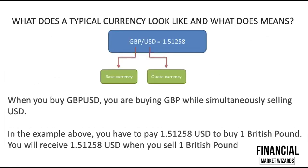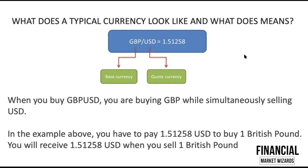The second question is: what does a typical currency look like and what does it mean? So we have pound/dollar as an example — pound slash USD at 1.51258. That's the price rate. Looking at the pair, pound is known as the base currency and USD is known as the quote currency. The currency on the left before the slash is the base currency, and on the right is the quote currency. When you buy pound/dollar, you are buying pound while simultaneously selling USD. Conversely, if you sell pound/dollar, you are selling pound while simultaneously buying USD.